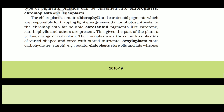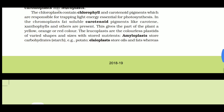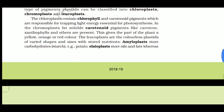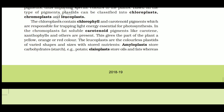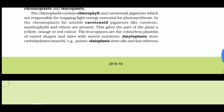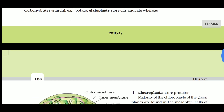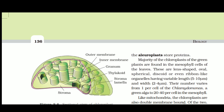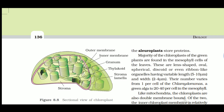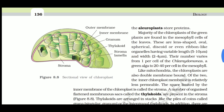Leucoplasts are colorless plastids that store nutrients. They are divided into: amyloplast, which stores carbohydrates (example: potato), and elaioplast, which stores oils and fats. If it stores proteins, we also call it elaioplast.